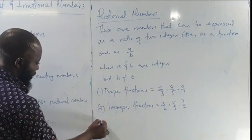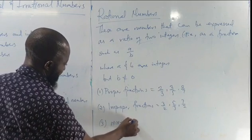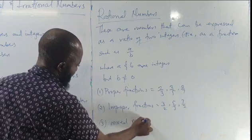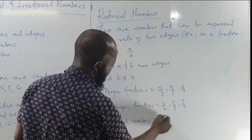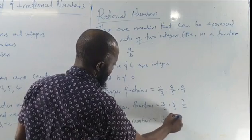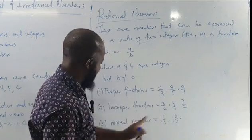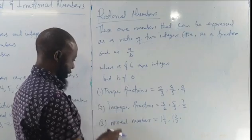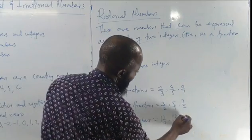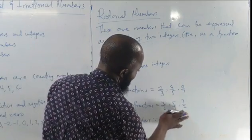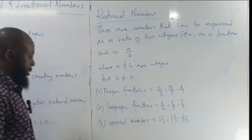The third example is mixed numbers. Mixed numbers — for example, 1 and a half, 1 and 2 thirds. So these are also examples of rational numbers.